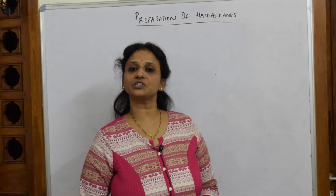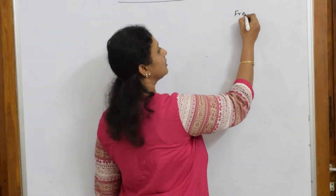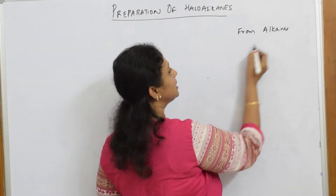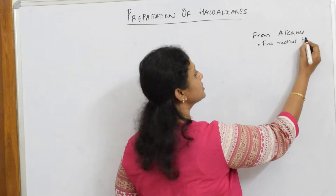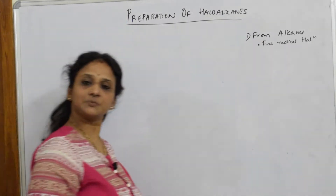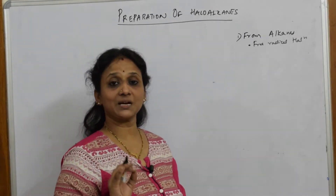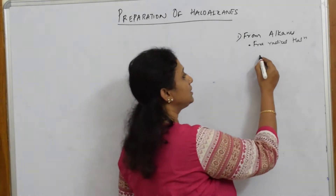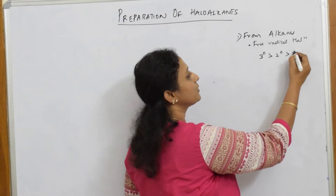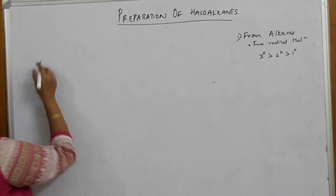Welcome back students. In my previous video I started with the preparations of haloalkenes. I prepared haloalkenes from alkenes using the free radical halogenation mechanism. I have solved some examples and reactions also. Be careful — please practice the reactions before your examination. Remember one key word: tertiary is more preferred than secondary, more preferred than primary. Write the products accordingly.